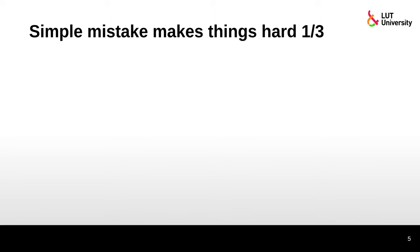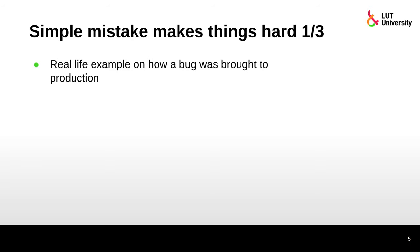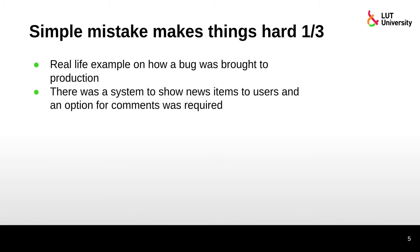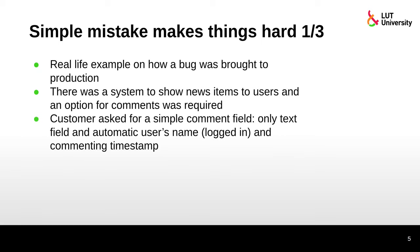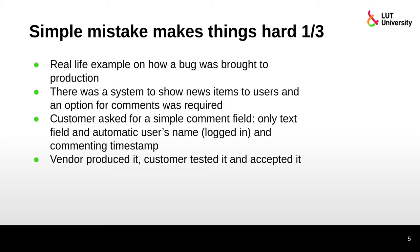Here's a real-life case example of how a simple mistake makes things hard — a story of how a bug was brought to production. There was a system with news items where logged-in users could read the news. The customer wanted users to also be able to comment on those news items. A simple comment field was required — just a text field — and the user's name and timestamp would be taken automatically from the system. The vendor produced it, the customer tested and accepted it.